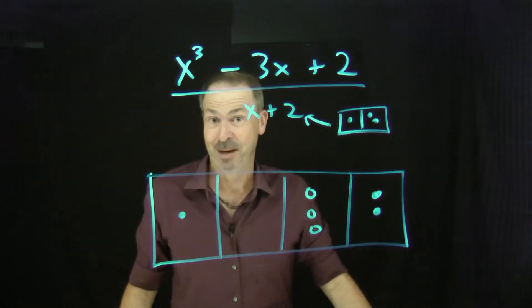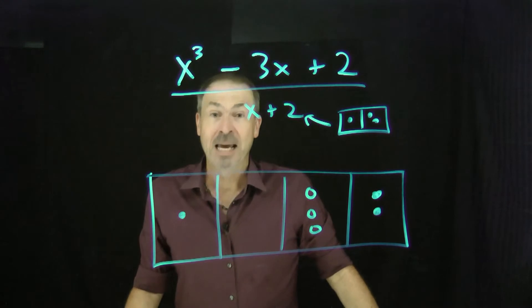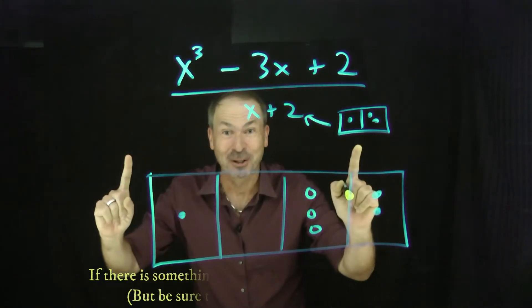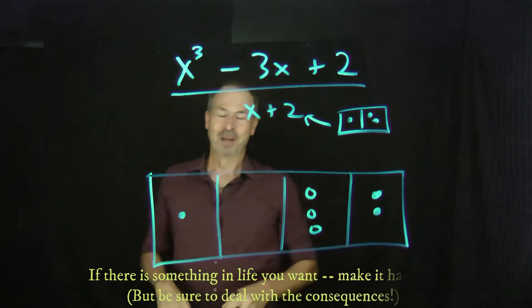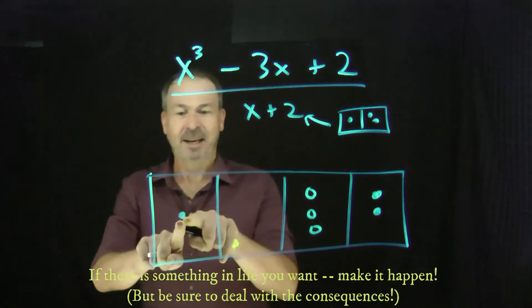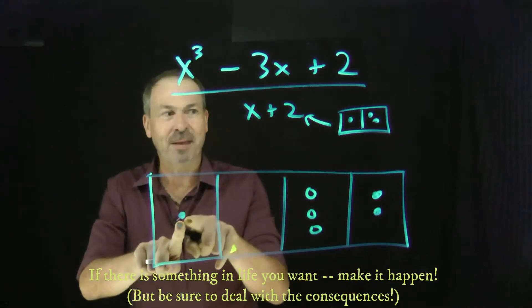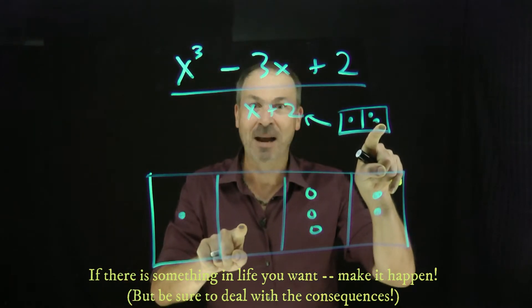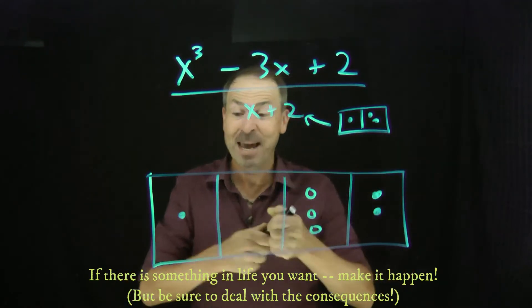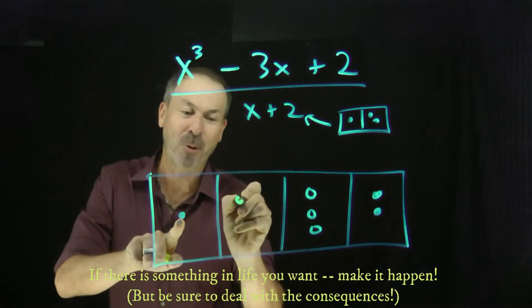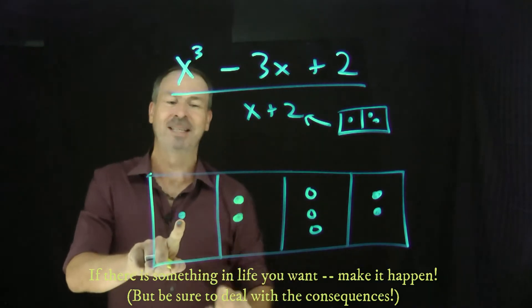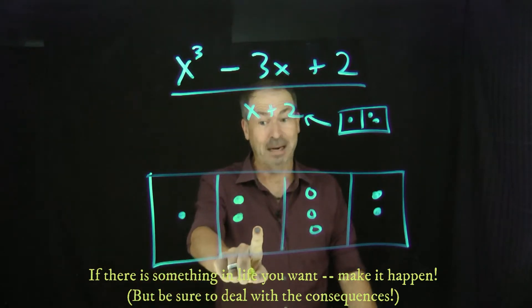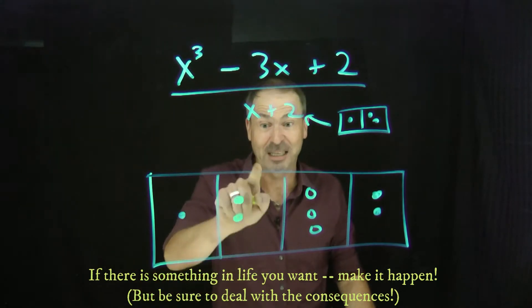Here's the life lesson: if there's something in life you want, make it happen, but deal with the consequences. For example, right now I see that isolated dot over there — one dot there. I would love to have two dots right there. Life lesson: if something in life you want, make it happen. So I put them in — there's two dots there. Great, but there are consequences.